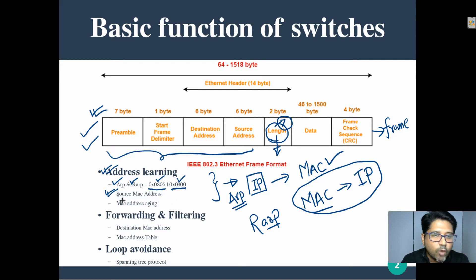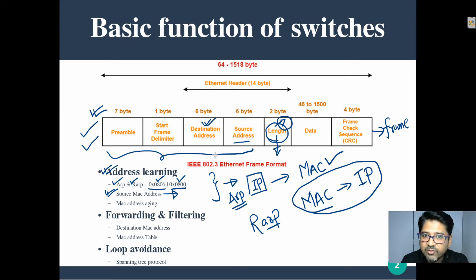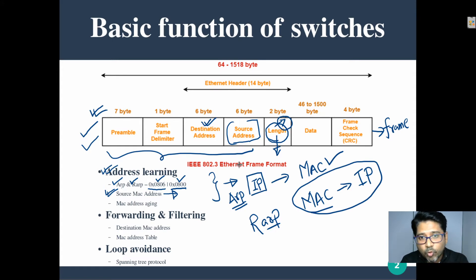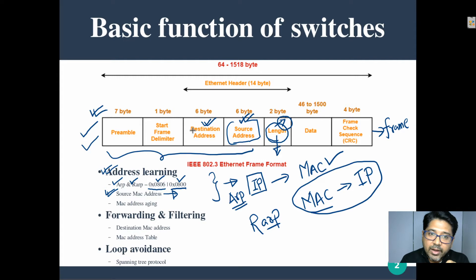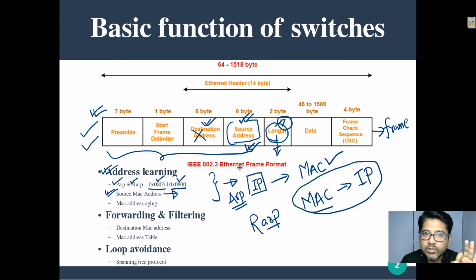The second part is source MAC address. The source MAC address shows which system or device the frame originated from — a computer, laptop, or any intermediate device. This gets installed in the MAC address table. The MAC address table only installs the source MAC, never the destination, because the source is always truthful and associated with a specific device.